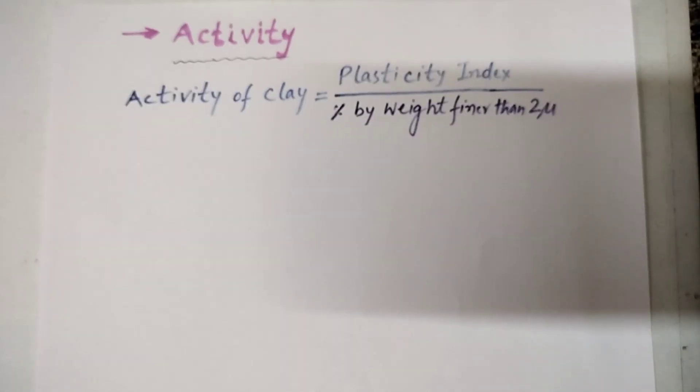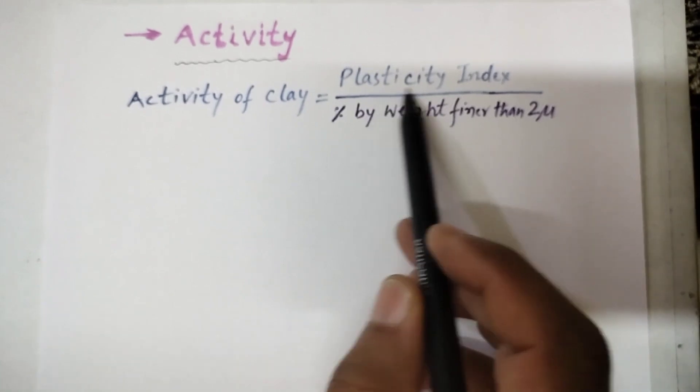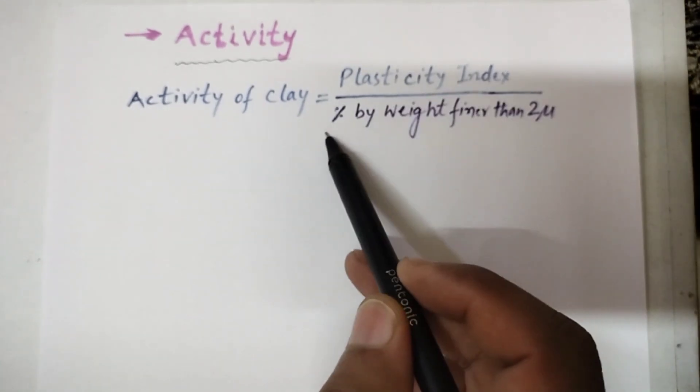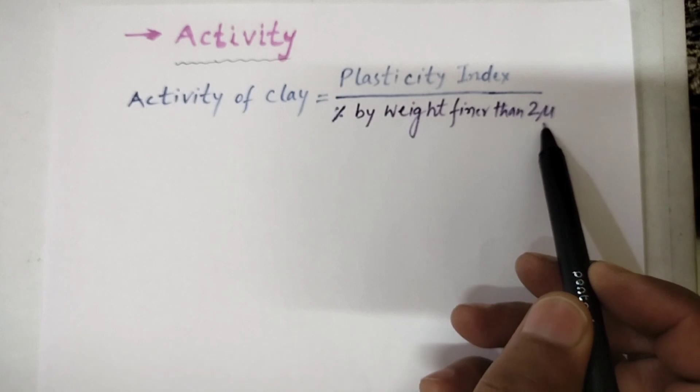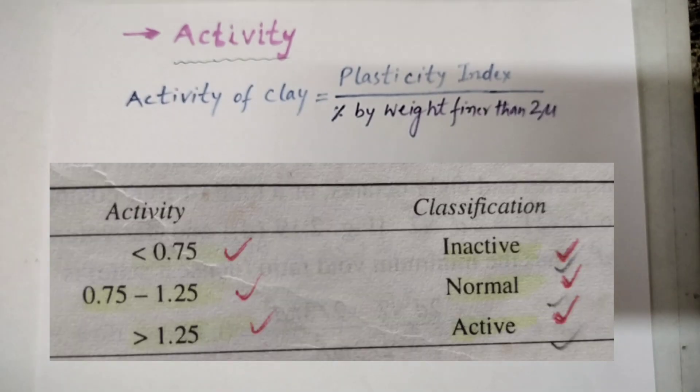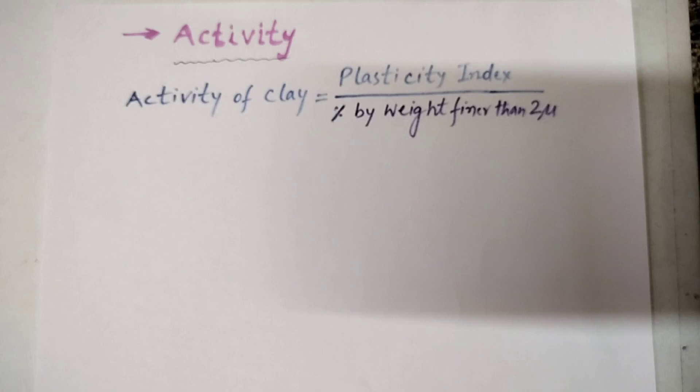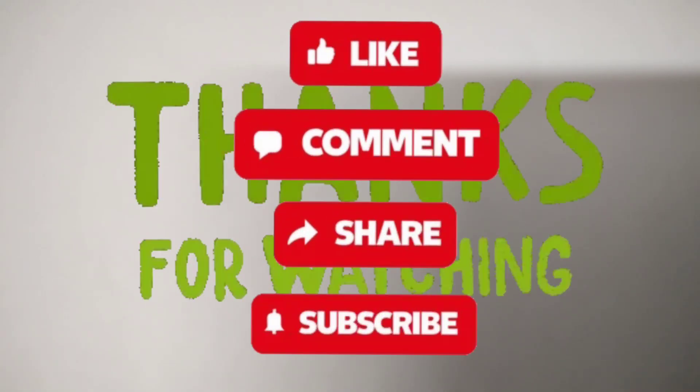Soil aggregate properties: Activity. Activity of clay is defined as plasticity index divided by percent by weight finer than 2 micron. We can see in the table, based on the activity, we can classify the soil as inactive, normal, or active. If the activity is less than 0.75, it is inactive. If the activity is 0.75 to 1.25, it is normal. And if it is more than 1.25, it is active.